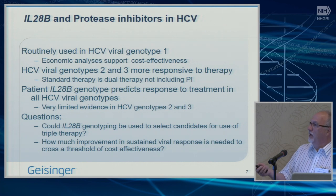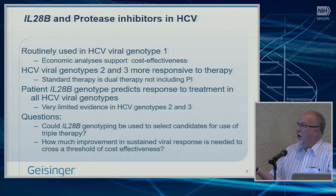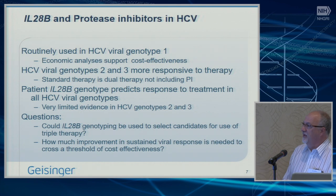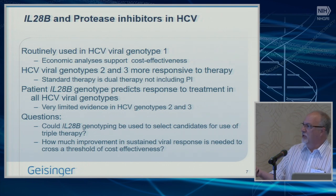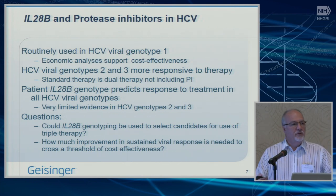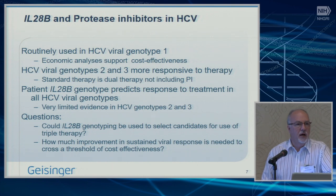The second example is IL-28B and protease inhibitors in hepatitis C. Protease inhibitors at that time were routinely used in HCV viral genotype 1, and there were several economic analyses supporting their cost-effectiveness. Because viral genotypes 2 and 3 are more responsive to therapy, standard therapy did not include protease inhibitors. However, we knew that there was a patient genotype in IL-28B that predicted good versus poor responders to treatment in all HCV viral genotypes, but there was almost no evidence related to its impact in genotypes 2 and 3.